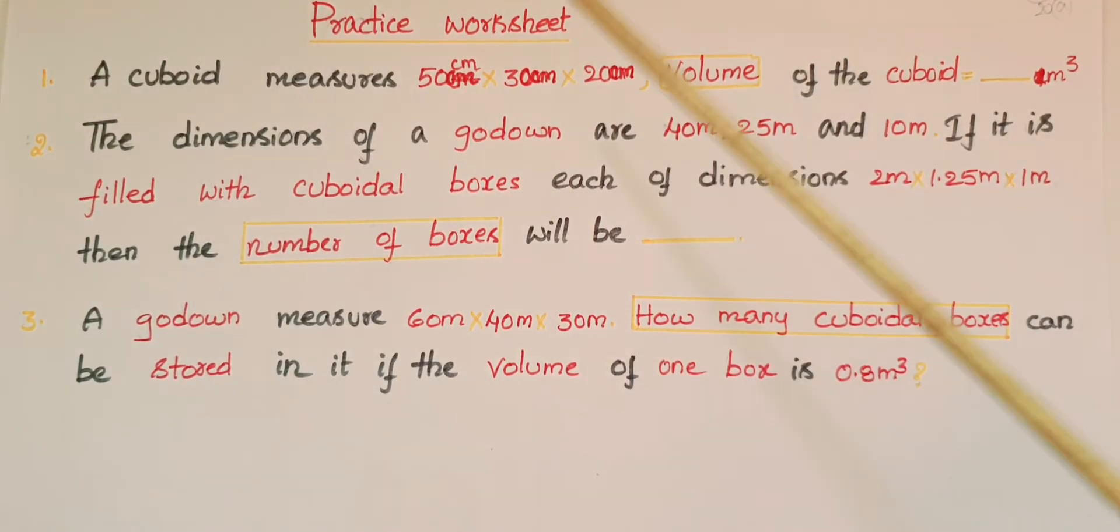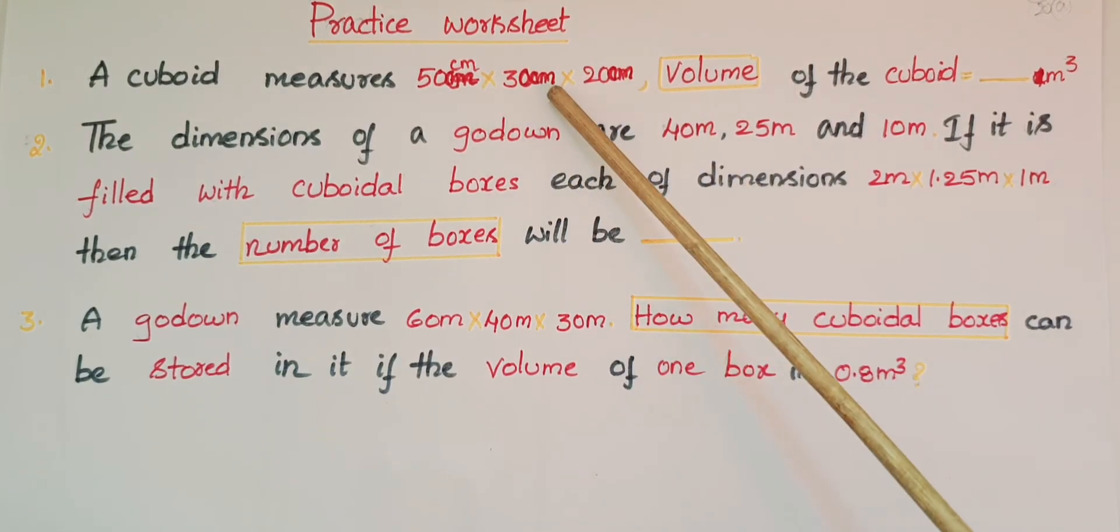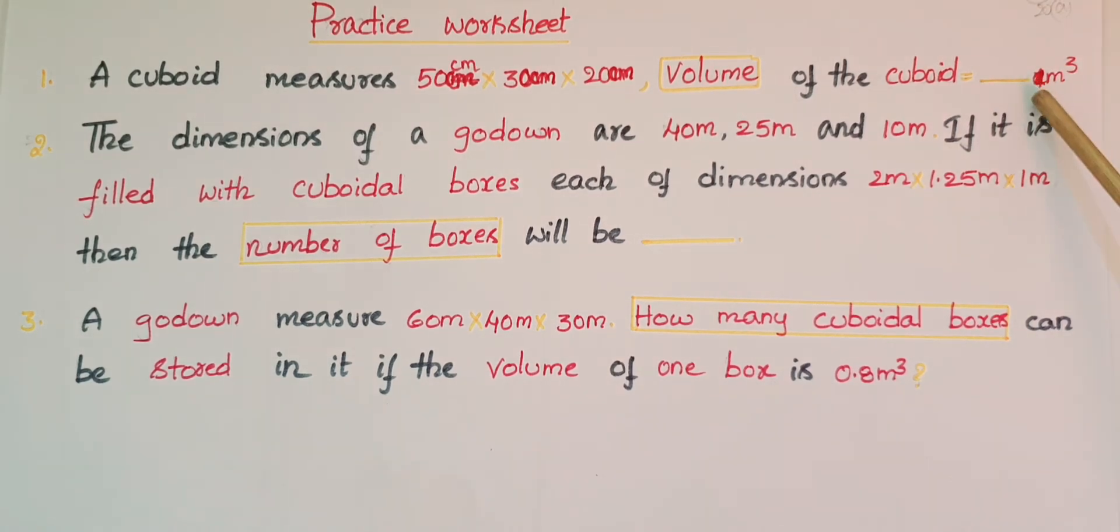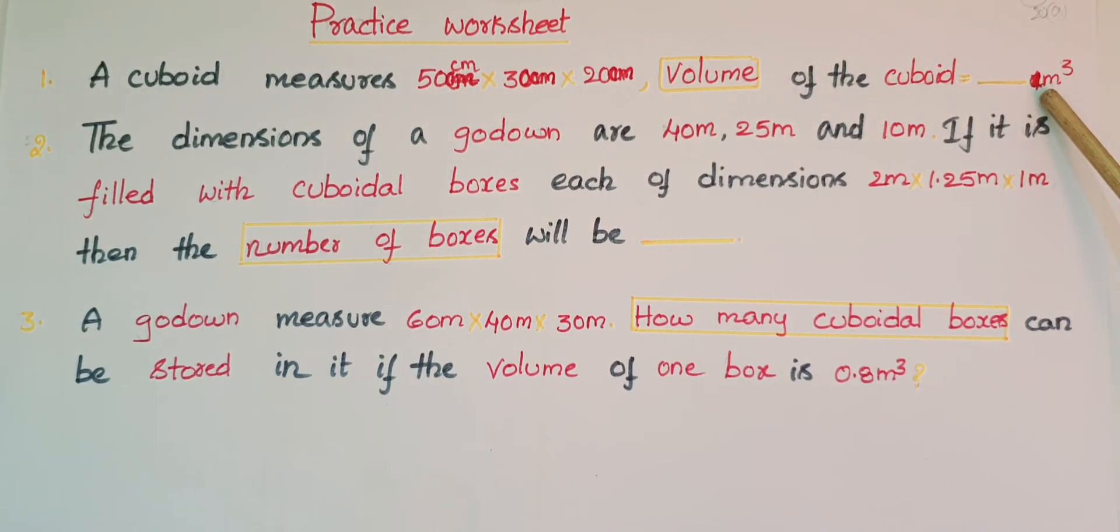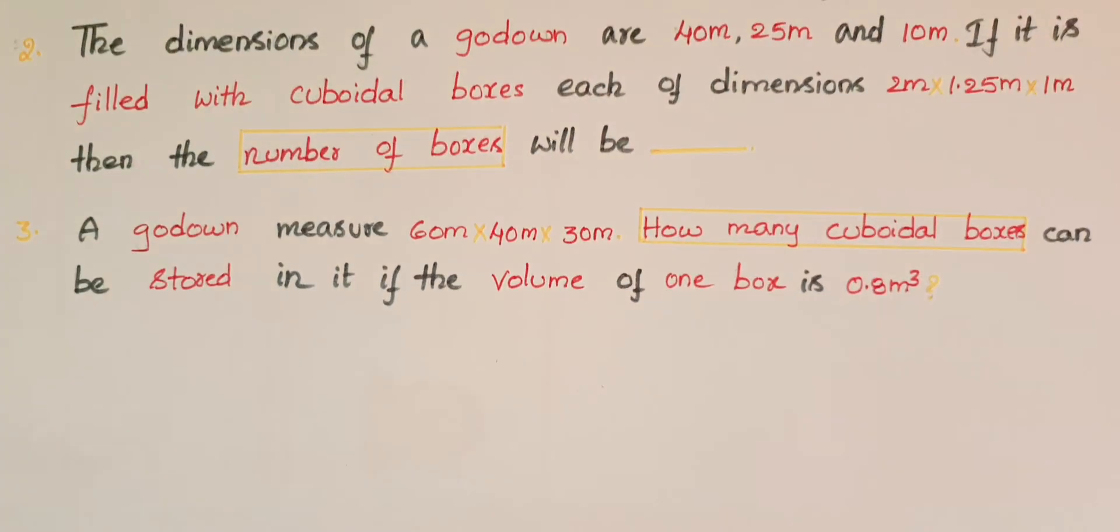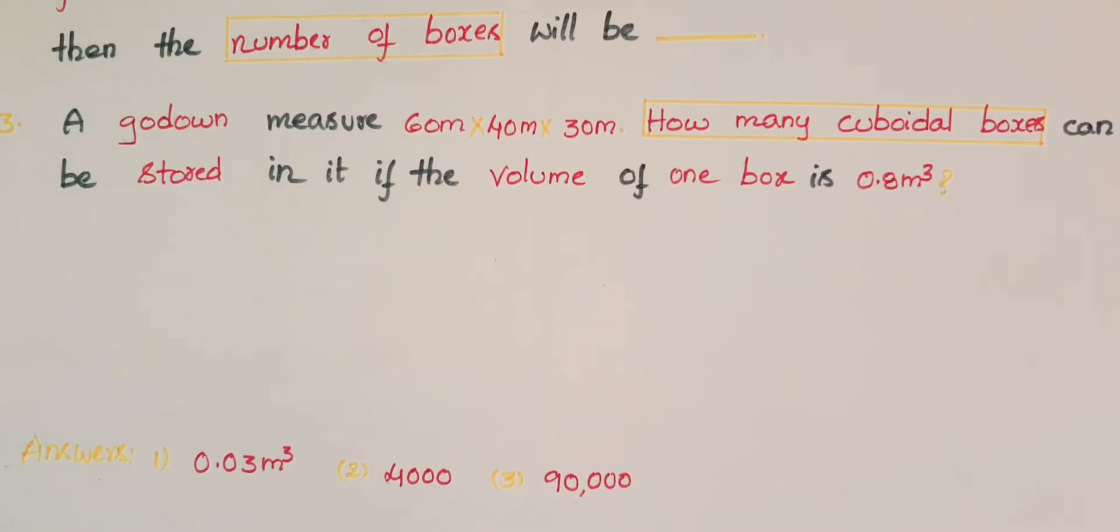Here these three values are in centimeters: 50 centimeters by 30 centimeters by 20 centimeters, and we have to find the volume of the cuboid in meter cube. Here are the answers.